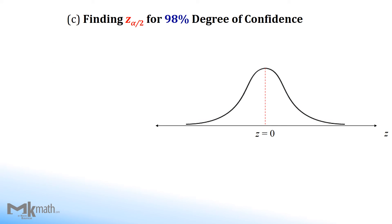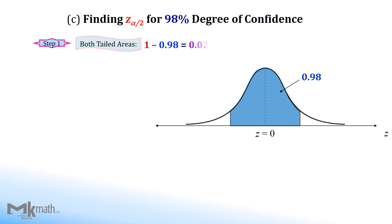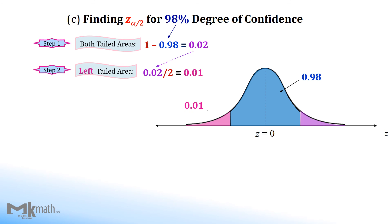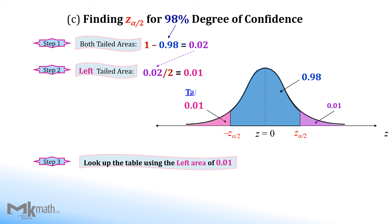Let's take a look at the next example. We shade the center area with the given confidence level 98%, or 0.98. Step 1: 1 minus confidence level 0.98 to get 0.02 as two-tailed areas. Step 2: divide the two-tailed areas by 2 to get the one-tailed area. Step 3: look up the table using the left-tailed area 0.01.